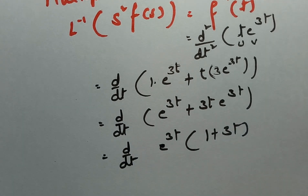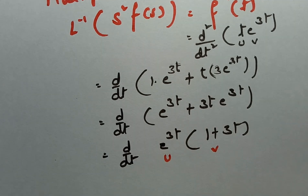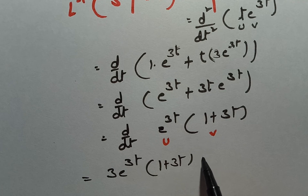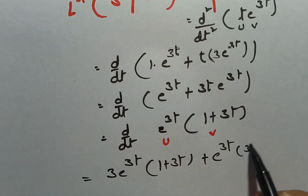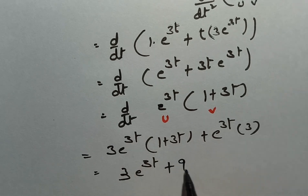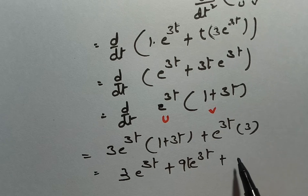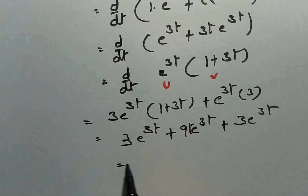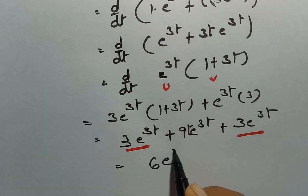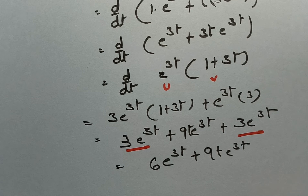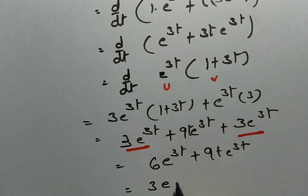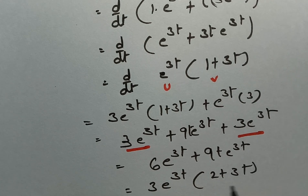Now take the second derivative of e^(3t)·(1+3t) using the UV rule again. Derivative of e^(3t) is 3e^(3t), leave (1+3t); plus leave e^(3t), derivative of (1+3t) is 3. This gives 3e^(3t)·(1+3t) + 3e^(3t). Simplifying: 3e^(3t) + 9t·e^(3t) + 3e^(3t) = 6e^(3t) + 9t·e^(3t). Taking 3e^(3t) common, the final answer is 3e^(3t)·(2+3t).